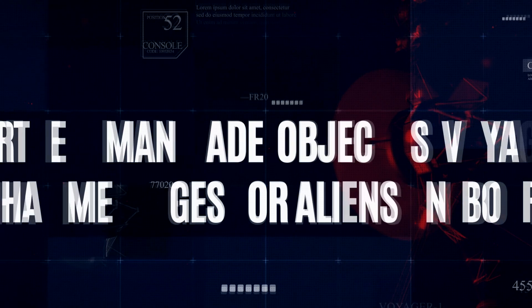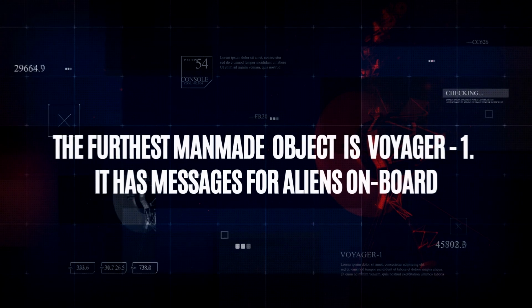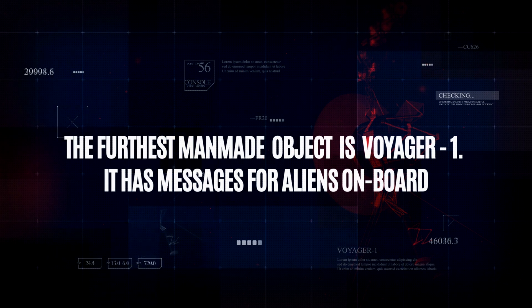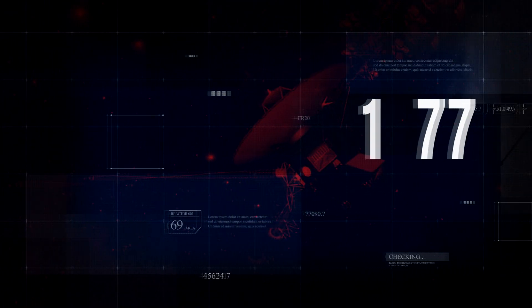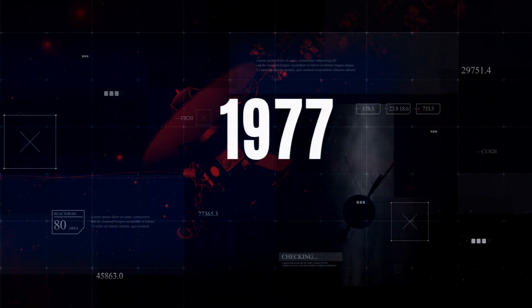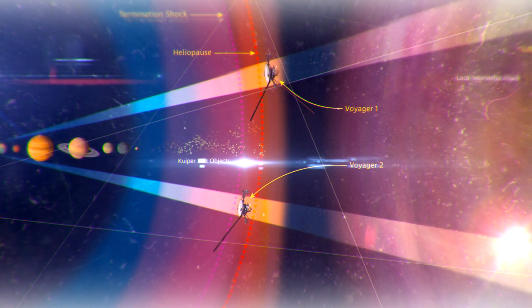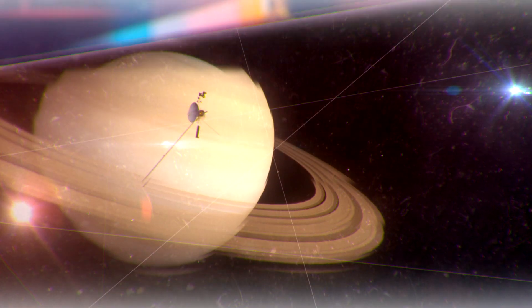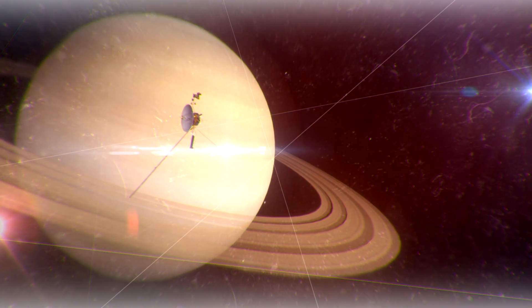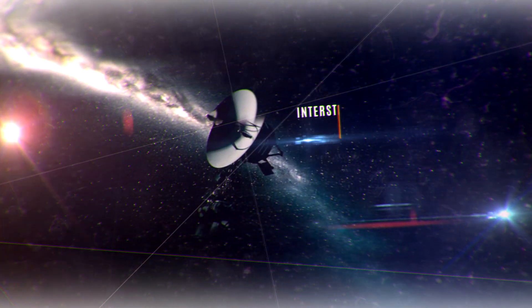The furthest man-made object is Voyager 1. It has messages for aliens on board. In 1977, Voyager 1 and 2 were launched. Their primary mission was to visit Jupiter and Saturn. Voyager 2 continued onto Uranus and Neptune. Voyager 1 has now made its way into interstellar space.